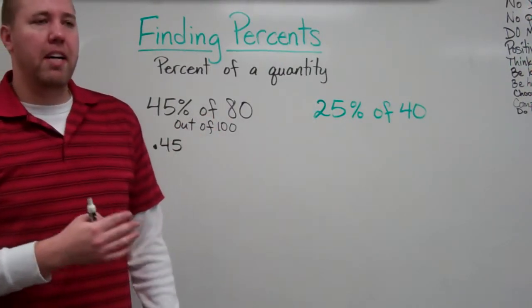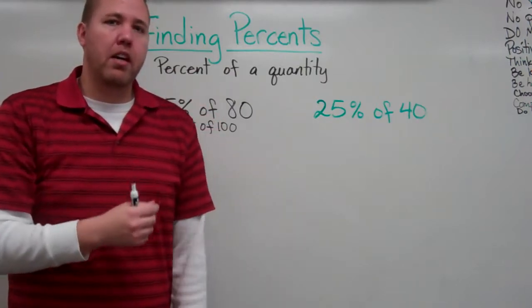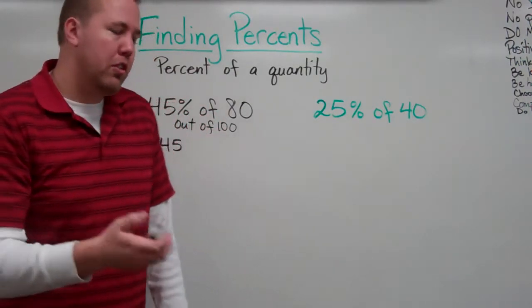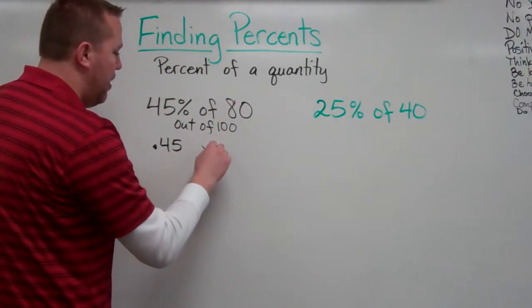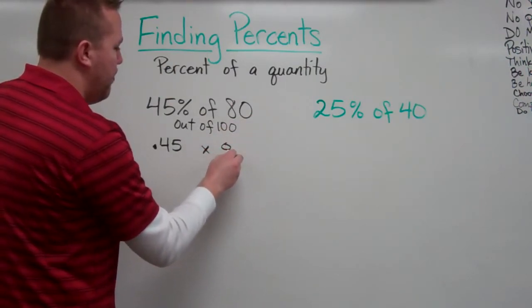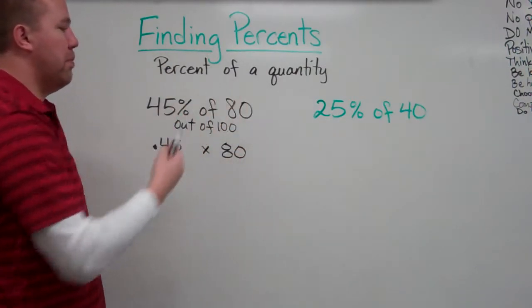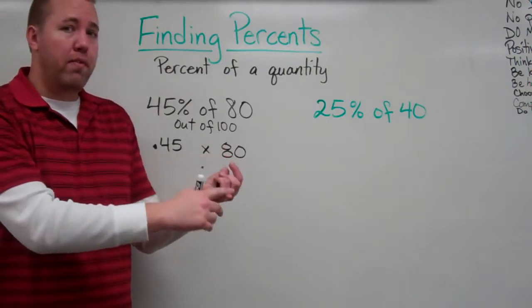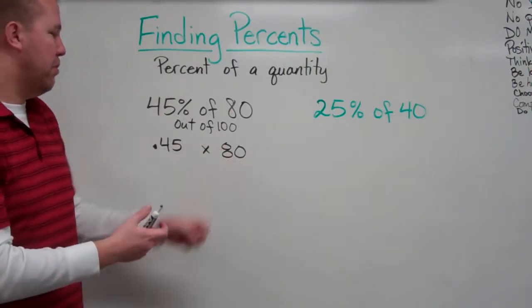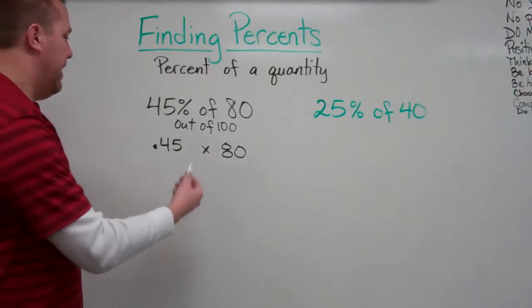Of, in this instance, when we're talking about a portion of something, most of the time we can multiply actually. So this of means multiplication, 80. So when we're looking at 45% of 80, .45 as a decimal, 45 hundredths times 80 will get us that answer.